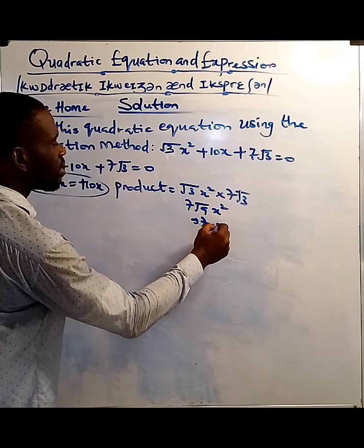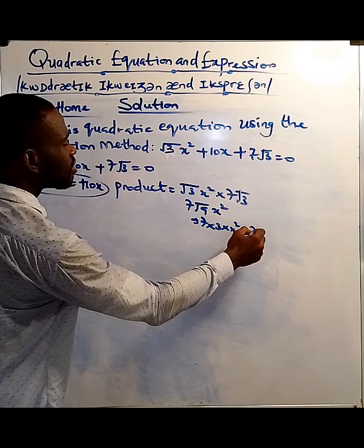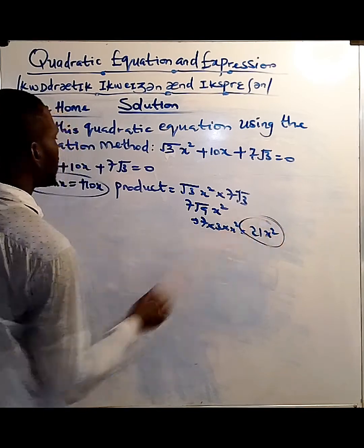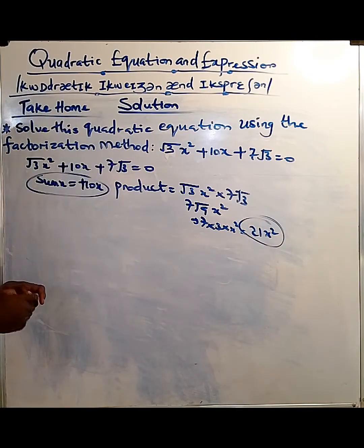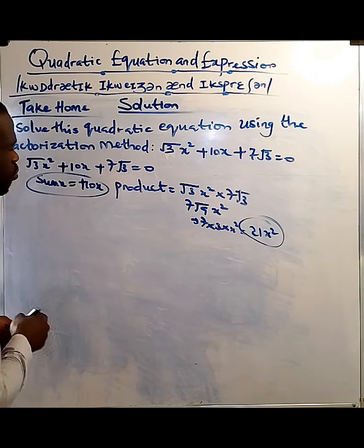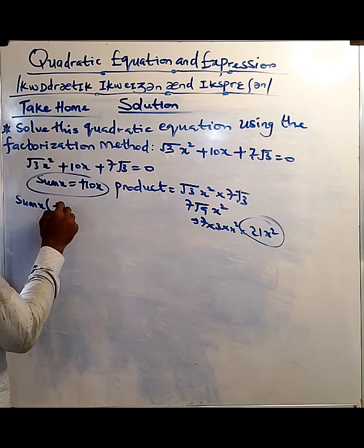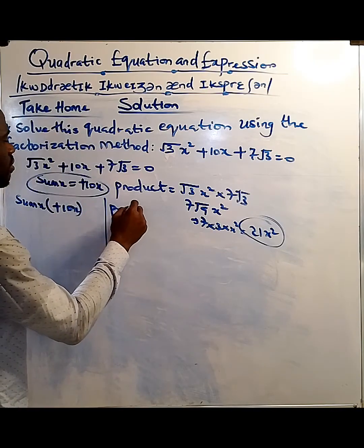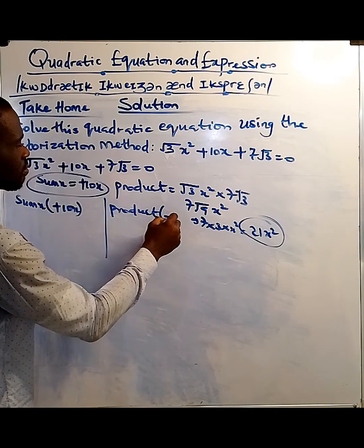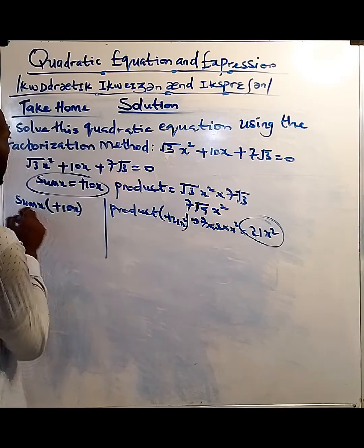So what do we have? 7 times 3 times x², which is 21x². So the sum is +10x. The product is +21x². So we are going to bring them together. Sum: +10x, Product: +21x². That's the product.